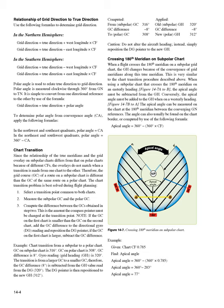Example — chart transition from a subpolar to a polar chart: GC on subpolar chart is 316 degrees; GC on polar chart is 308 degrees; GC difference is 8 degrees; gyro reading (grid heading GH) is 320 degrees. The transition is from a larger GC to a smaller GC. Therefore, the GC difference of 8 degrees is subtracted from the GH value read from the DG, 320 degrees. The DG pointer is then repositioned to the new GH of 312 degrees.